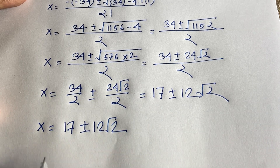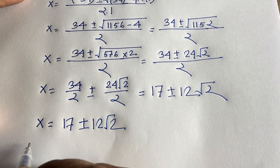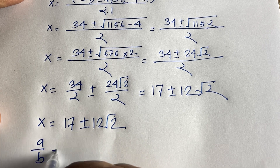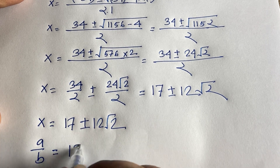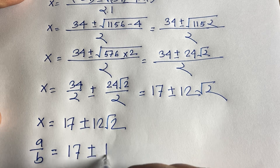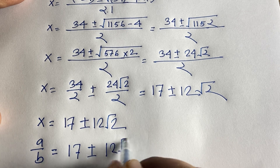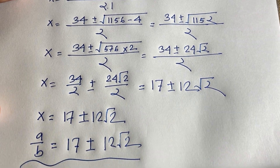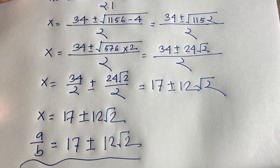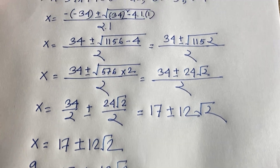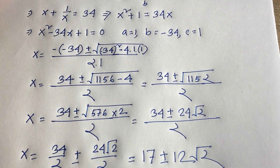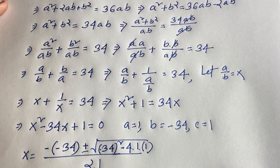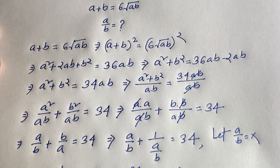Recalling that x equals a/b, our final answer is a/b equals 17 ± 12√2. This is our final answer to this maths olympiad question. Thank you all — if you enjoyed this video, please subscribe to my channel for more interesting videos. Goodbye, take care.